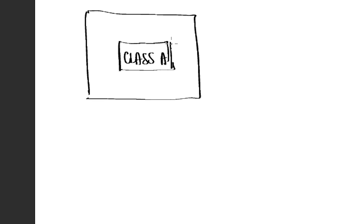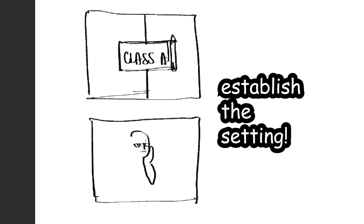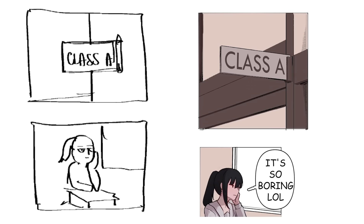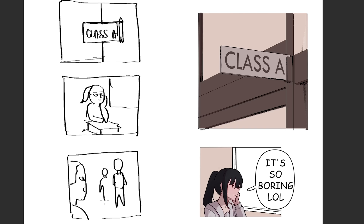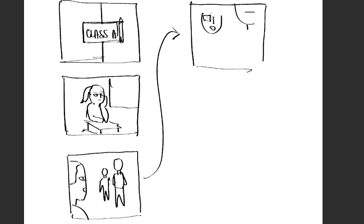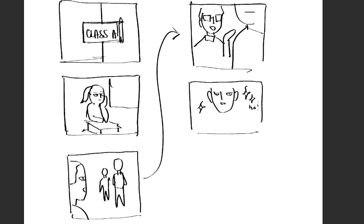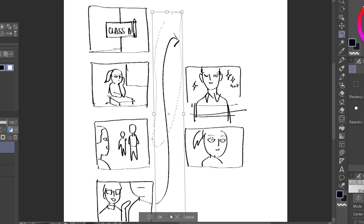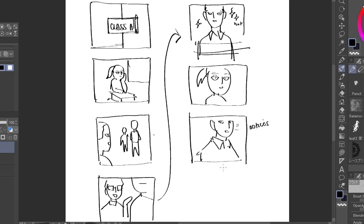We're now at step five: storyboarding. A storyboard is basically a very rough doodle of what you want to see in your comic — pretty much like a draft. The very first rule is to establish the setting. You want your viewers to know where the heck the story is happening, so I'd want to show the setting in the first panel. This is set in Classroom A. What I want for storyboards is to very quickly draw how I want it to happen — everything simplified — but just make sure that after doodling it, you can still understand what you just drew, because when you come back to it, you might not.